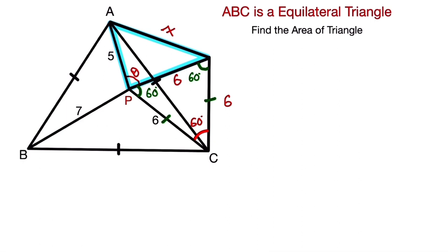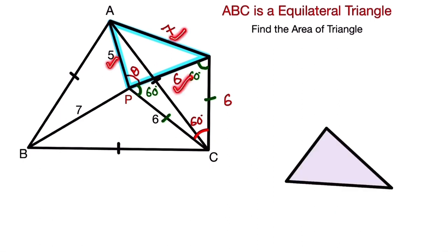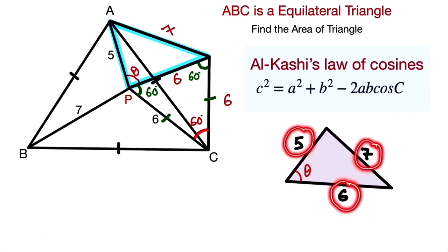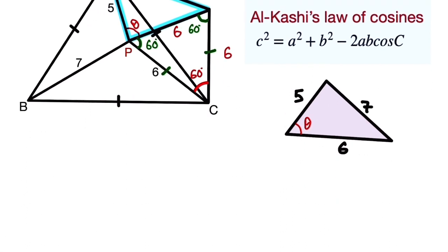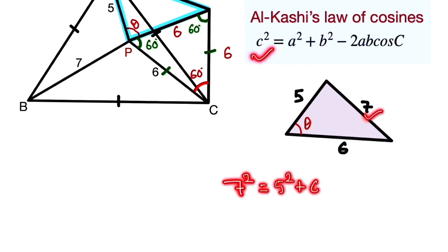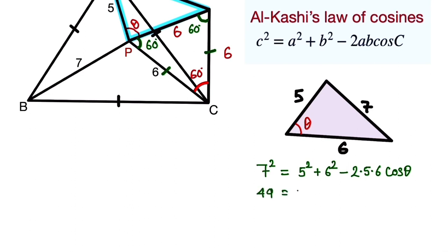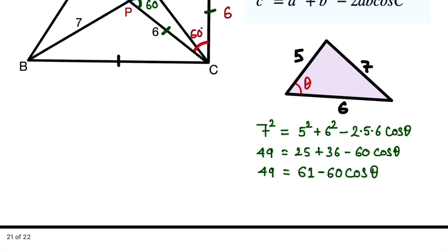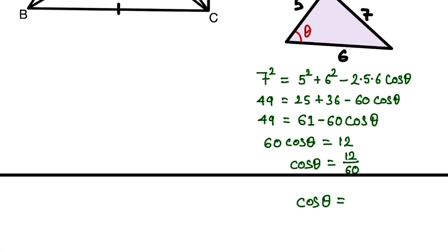Now we notice triangle AB and this point — it looks like a triangle with sides 5, 7, and 6. This angle is theta. Since we have sides 5, 6, and 7, we use the law of cosines: c² = a² + b² − 2ab·cos(C). So, 7² = 5² + 6² − 2·5·6·cos(θ). That gives us 49 = 25 + 36 − 60·cos(θ), which means 49 = 61 − 60·cos(θ). From here, cos θ = 2/10, which simplifies to 1/5. So cos θ = 1/5.